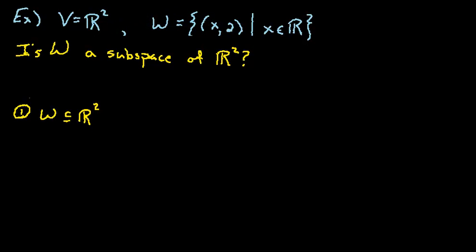Okay, so a couple of things to check. First of all, W is a subset of R². The next thing we want to check is closure under addition, and we will see this is not closed under addition.